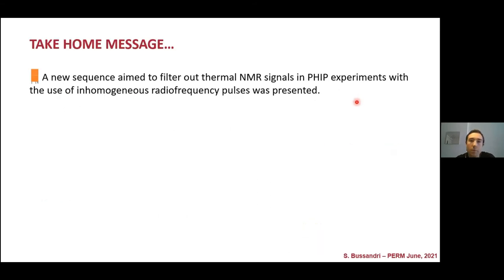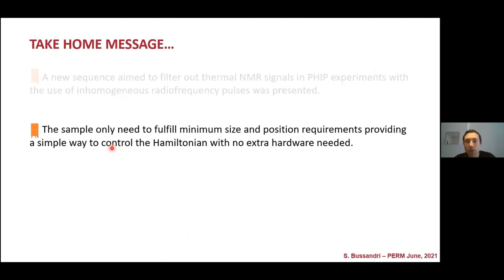So as a take-home message, we introduced a new sequence that filters out thermal NMR signal in PHIP experiments with the use of inhomogeneous radiofrequency pulses. The sample only needs to fulfill minimum size and position requirements, providing this way a simple way to control the evolution of the spins during the RF with no extra hardware needed.